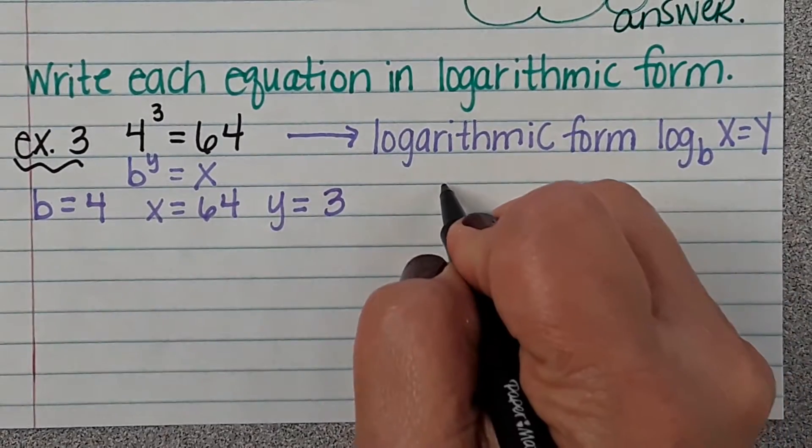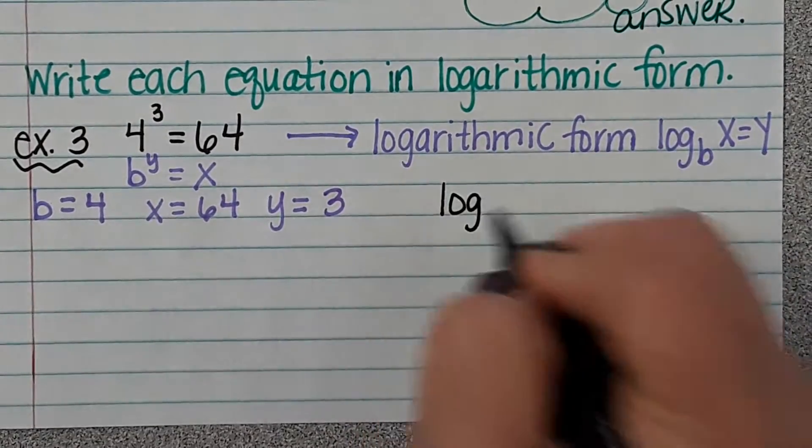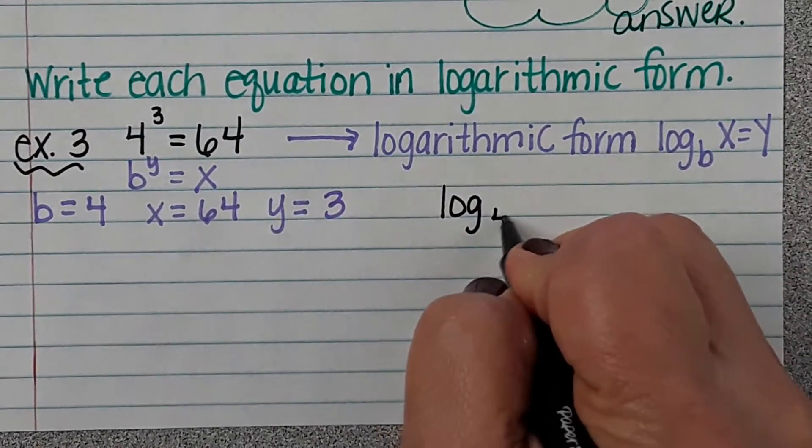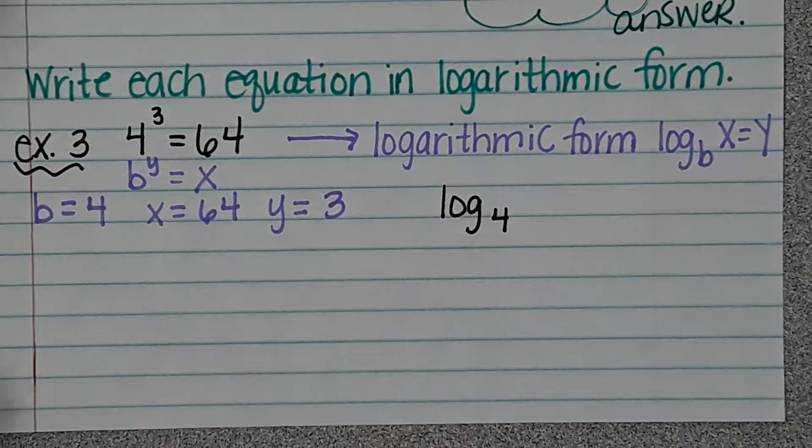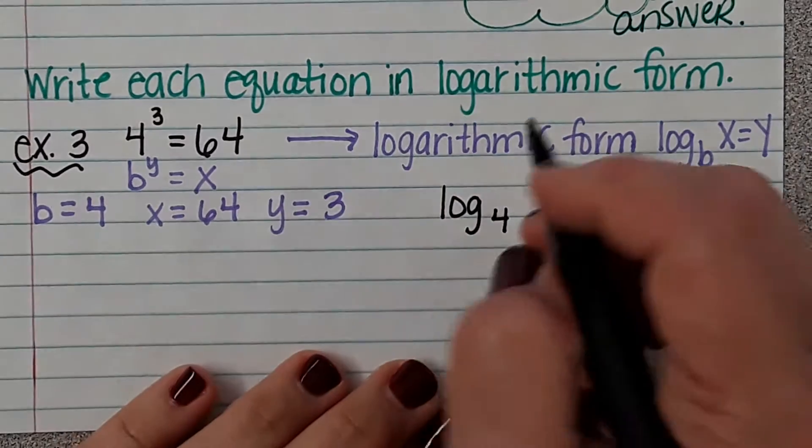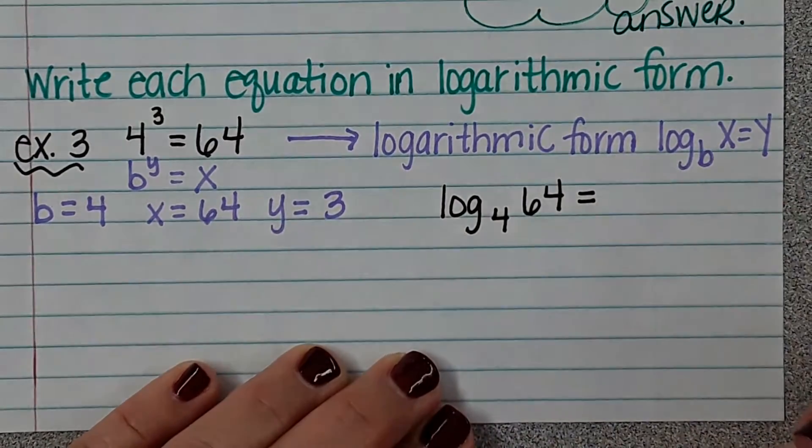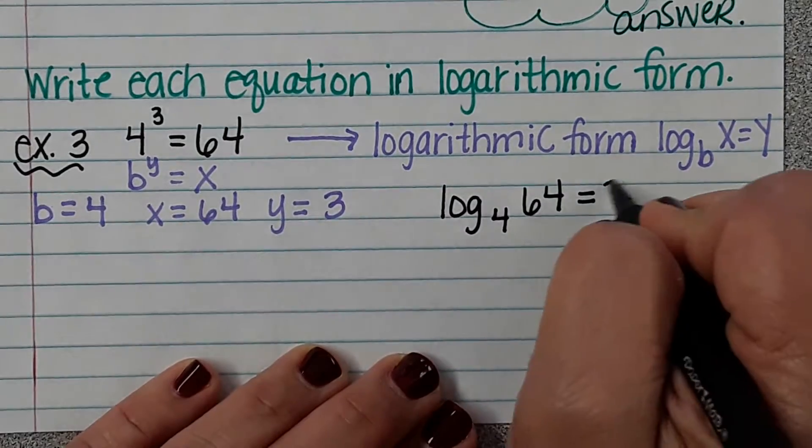So we're going to write log. And then what is our b? So 4 is a subscript, so it's going to go down at the bottom. Then what is our x? 64. And that should equal our y, which is 3.